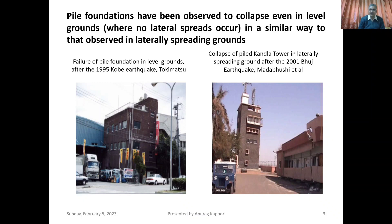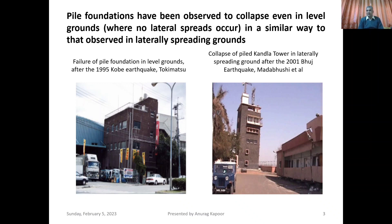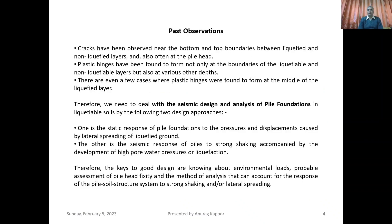Pile foundations have been observed to collapse even in level grounds where no lateral spreads occur, in a similar way to that observed in laterally spreading grounds. I am showing two images taken from research papers: failure of pile foundation in level grounds after the 1995 Kobe earthquake by Tokimatsu, and collapse of a piled Kandla tower in laterally spreading ground after the 2001 Bhuj earthquake by Madabhushi et al. The left-hand image shows no lateral spreads after failure, while the right-hand shows lateral spreads occurred. Both buildings settled and tilted.